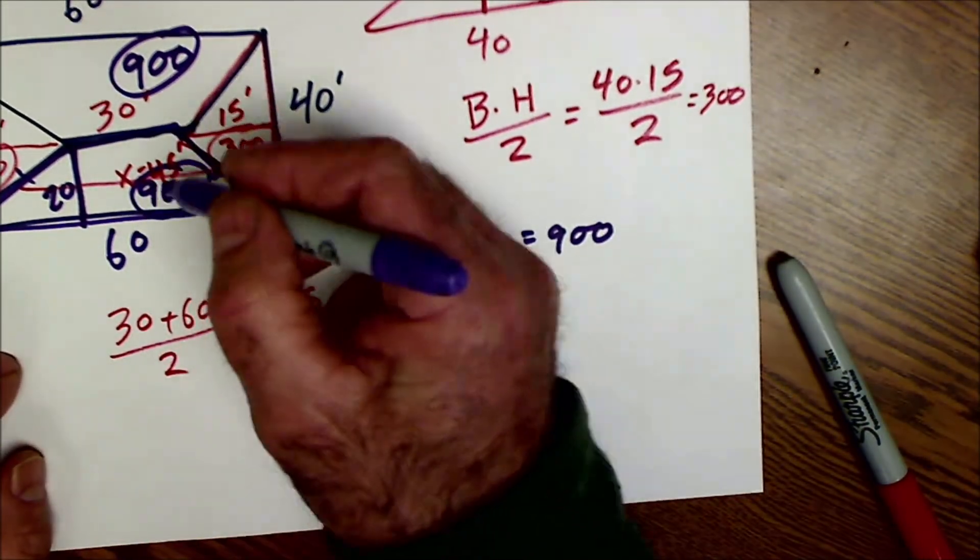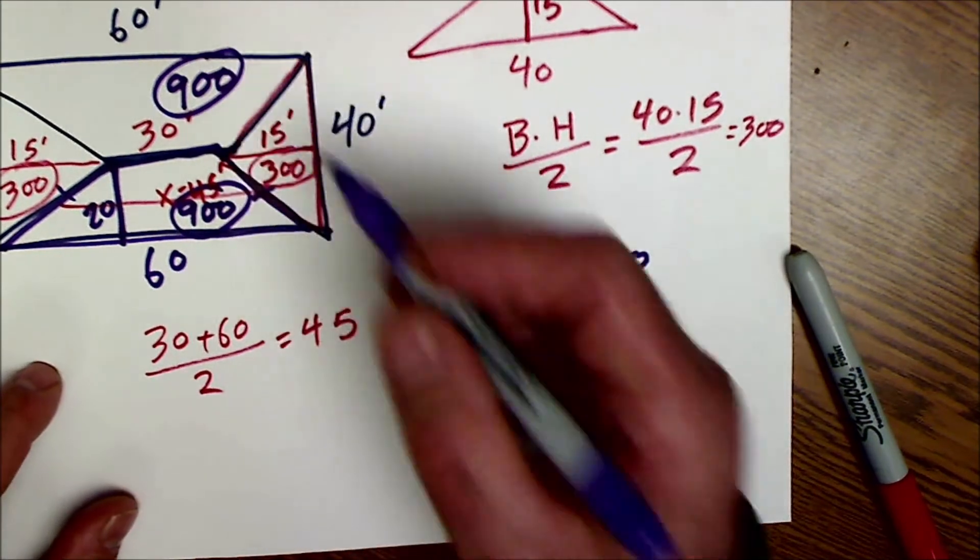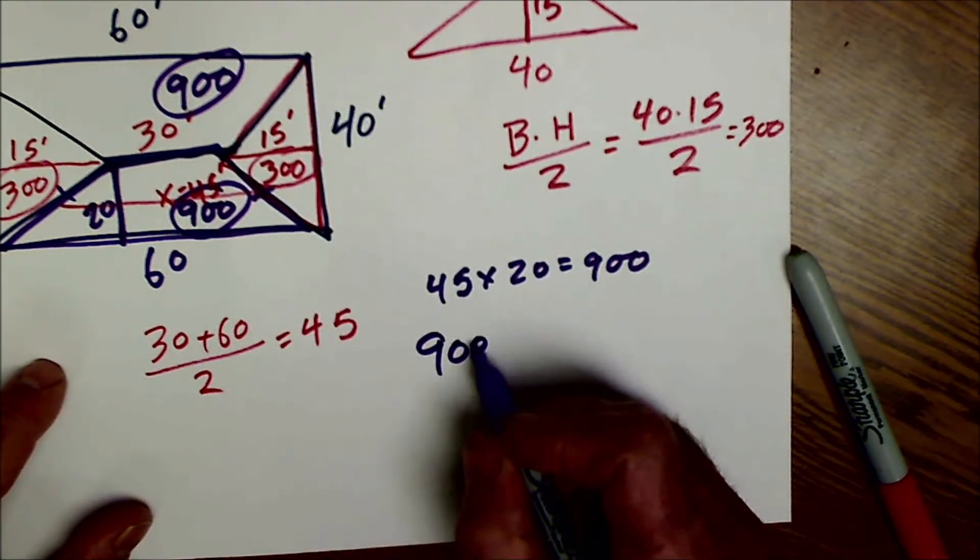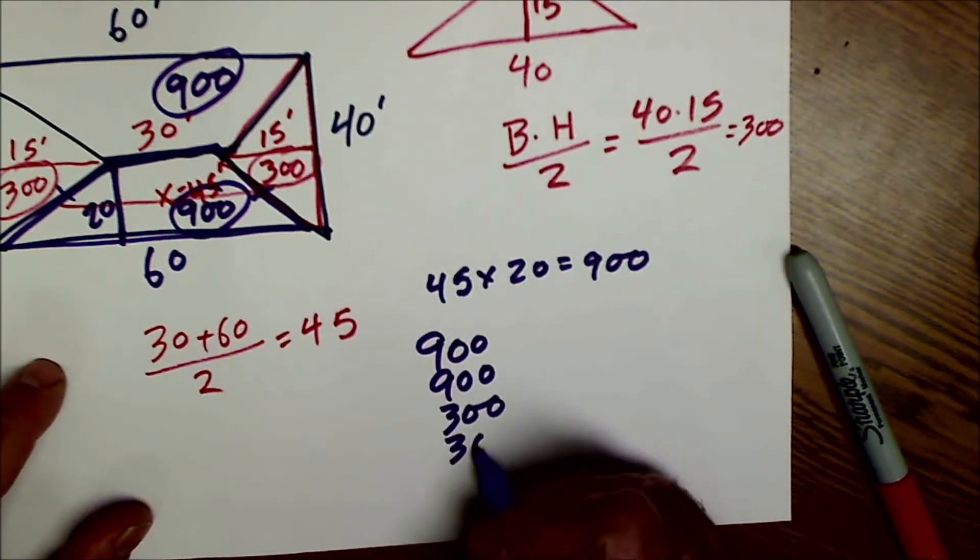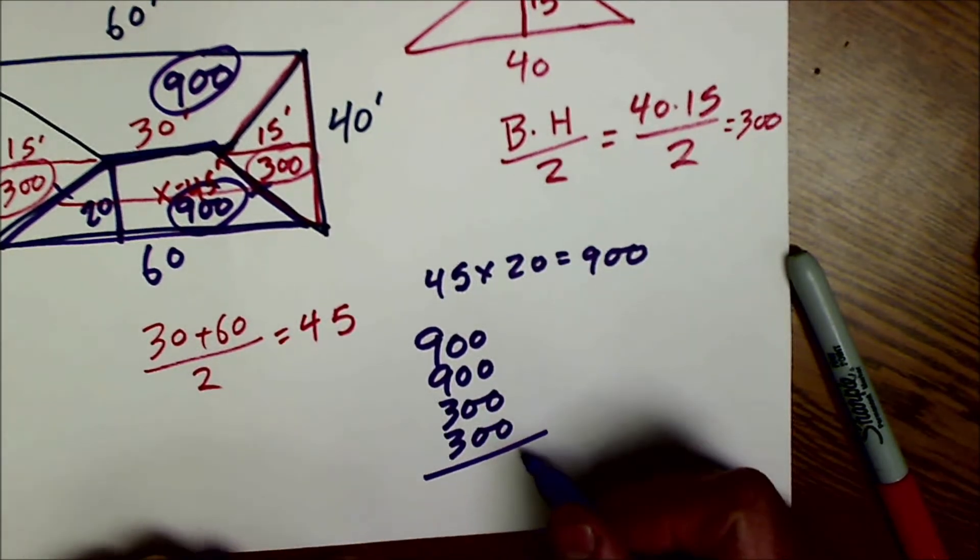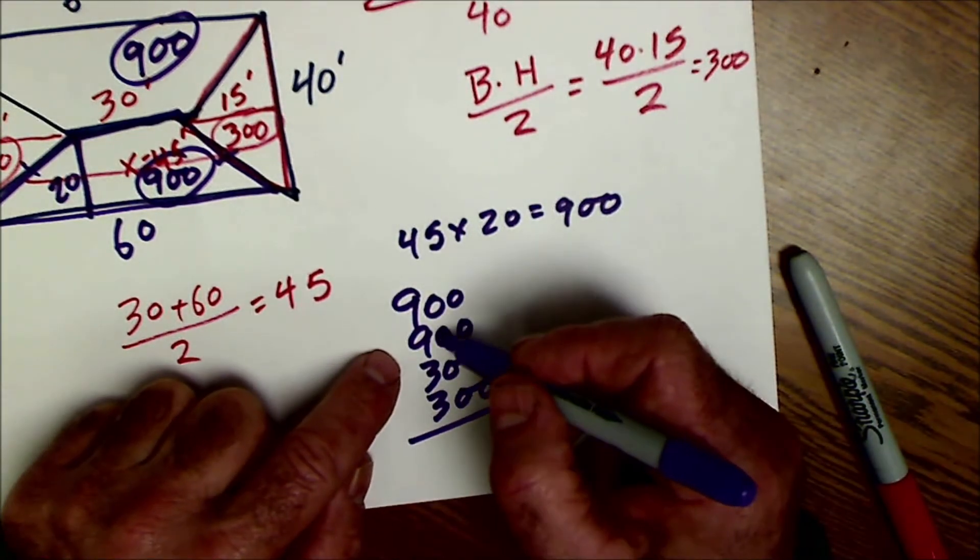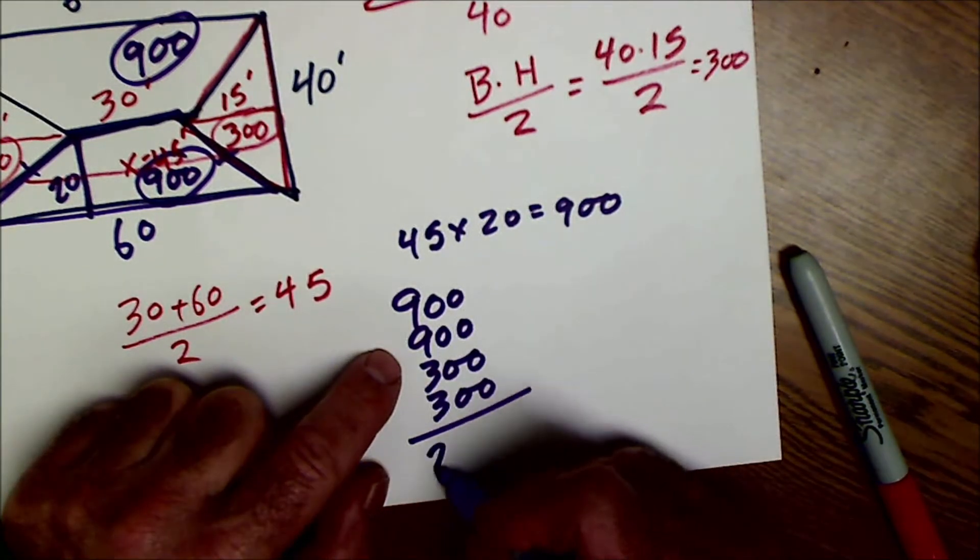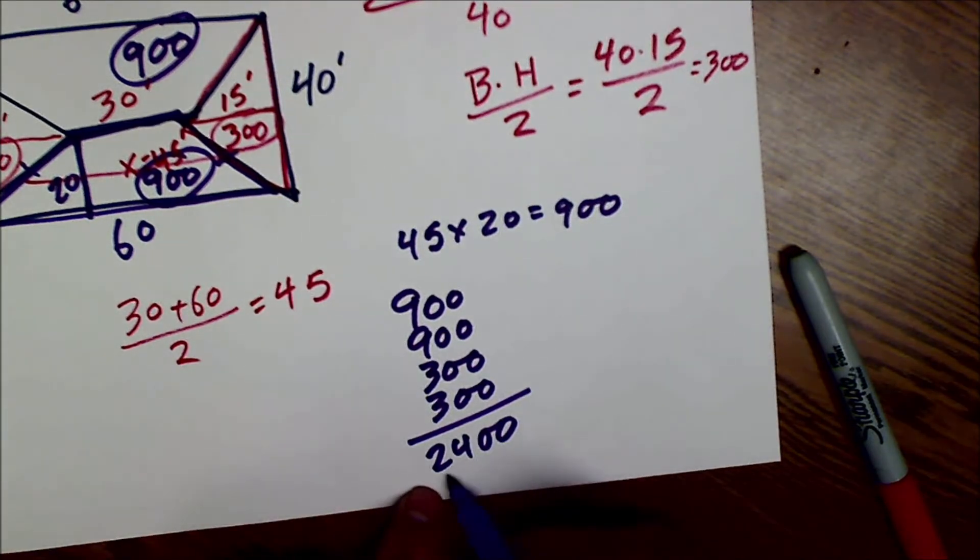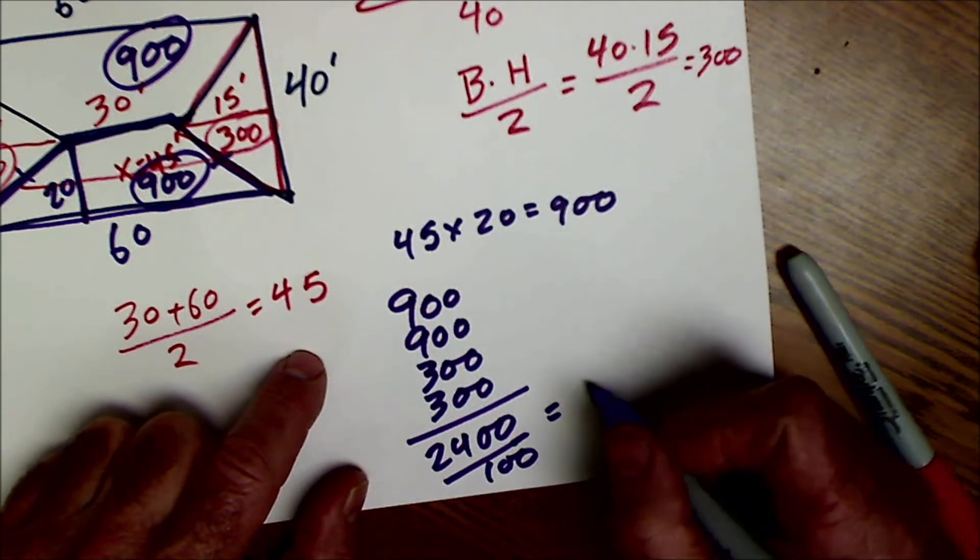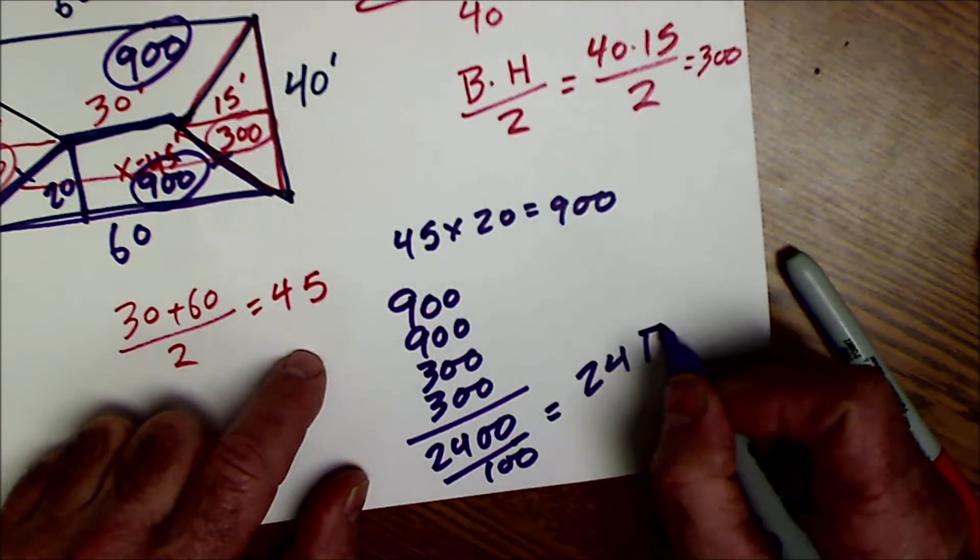Then, now I have the one trapezoid, the other one, I'm going to add all those up: 900, 900, plus the 300, plus the 300. That's going to be my total square footage. 18 and 6 is 2,400 square feet, and then 2,400 divided by 100 square feet to get the number of squares is going to be 24 squares.